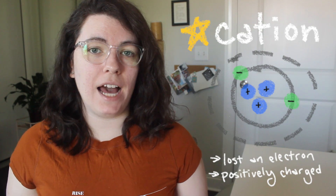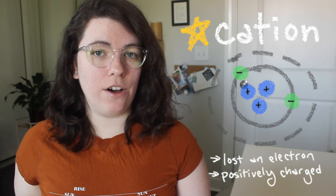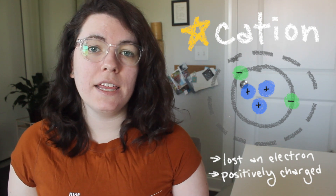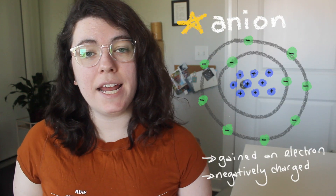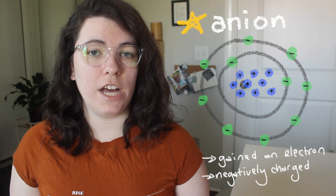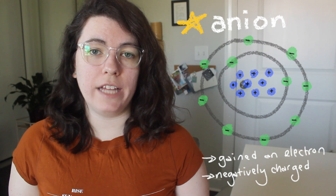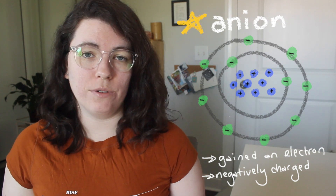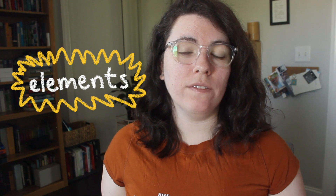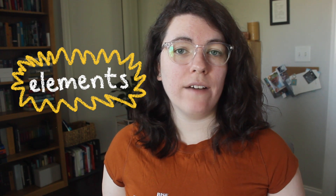However, atoms sometimes lose or gain electrons. When an atom loses an electron, it becomes what's known as a cation, or a positively charged ion, because it has more positively charged protons than negatively charged electrons. When an atom gains an electron, it becomes an anion, or a negatively charged ion, because it has more negatively charged electrons than positively charged protons. There are a variety of different types of atoms, each containing a different number of protons in their nucleus. These different types of atoms are called elements, and the difference in the amount of subatomic particles they contain causes them to have different characteristics.